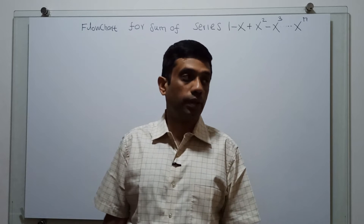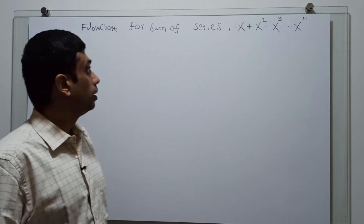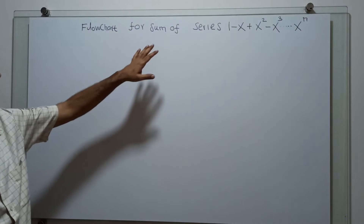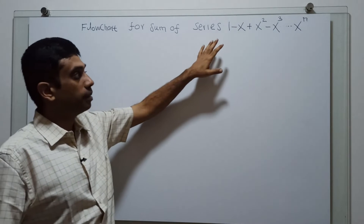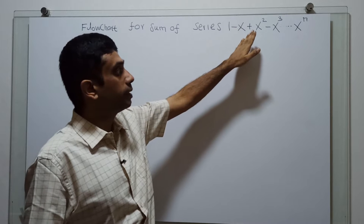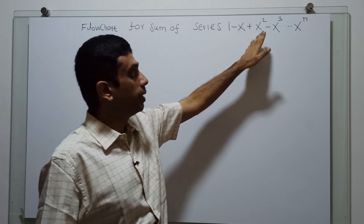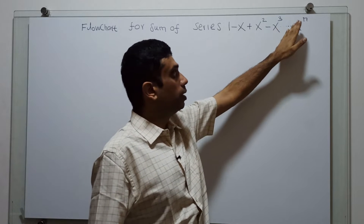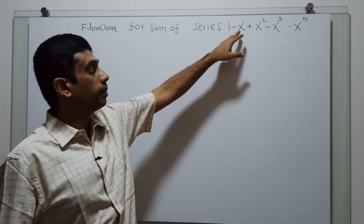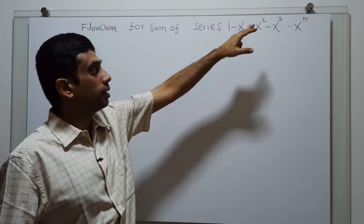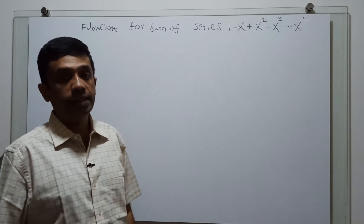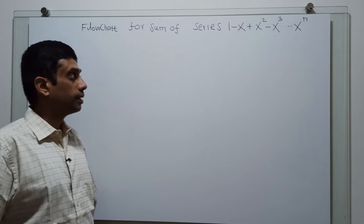Hello friends, we are going to draw a flow chart to calculate the sum of the series 1 minus x plus x squared minus x cubed, up to x power n. We have to obtain the values x and n as input and calculate the series.